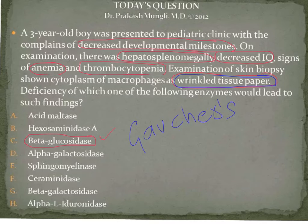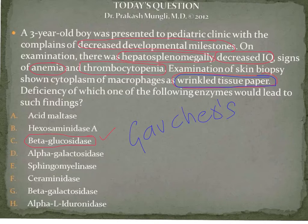Beta-glucosidase is also called glucocerebrosidase, which is also called glucosylceramidase. So there are three names for this enzyme: beta-glucosidase, glucosylceramidase, and glucocerebrosidase.